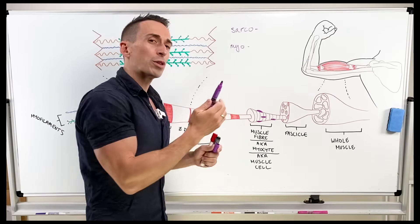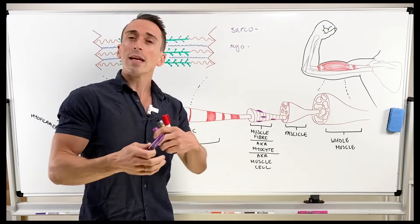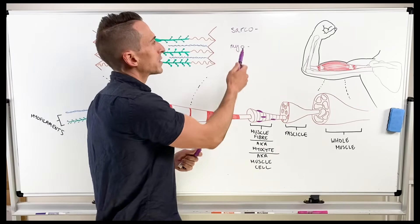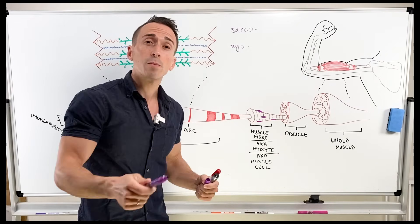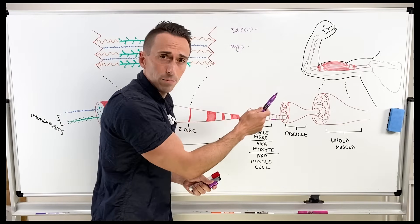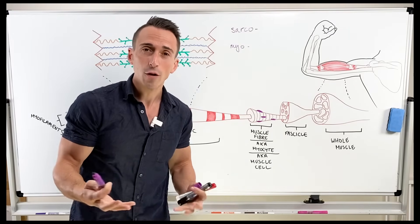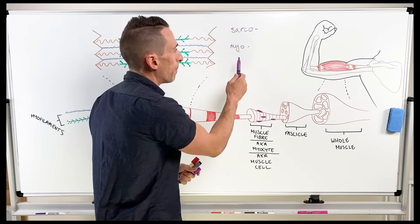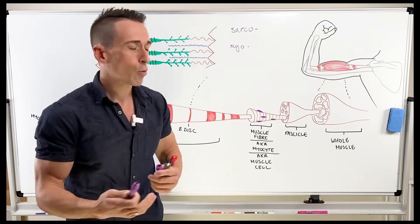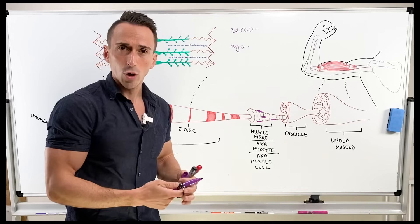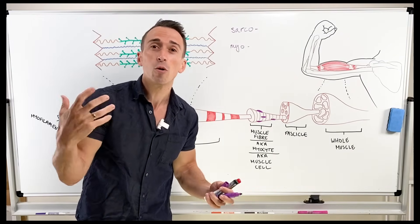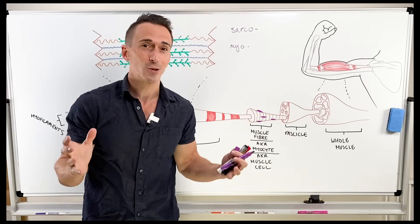For example, there's a term called the sarcoplasmic reticulum — that is simply the endoplasmic reticulum for skeletal muscle. We have the sarcolemma, which is simply the plasma membrane of skeletal muscle. We've got the sarcoplasm, that's the cytoplasm of skeletal muscle. With myo, we've got a myocyte — that's a muscle cell. We've got a myofibril, which is what myocytes are made out of. And we've got myofilaments, which are the contractile proteins that allow muscle to contract.